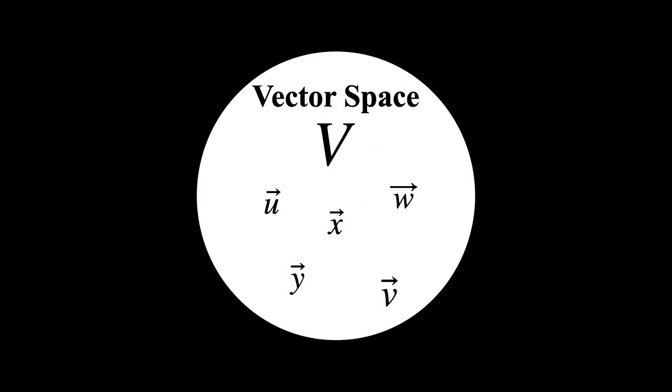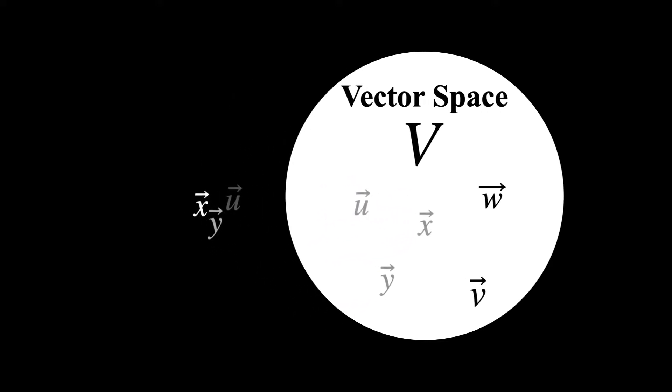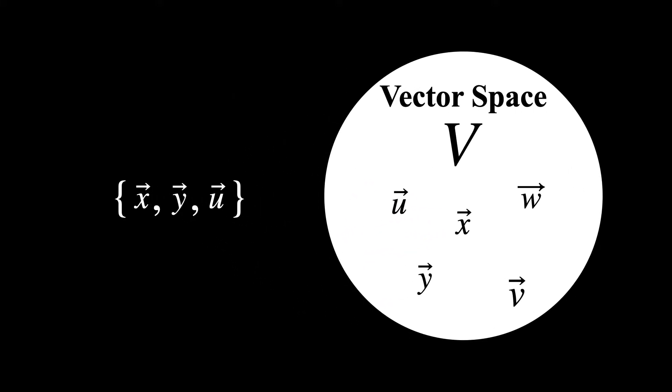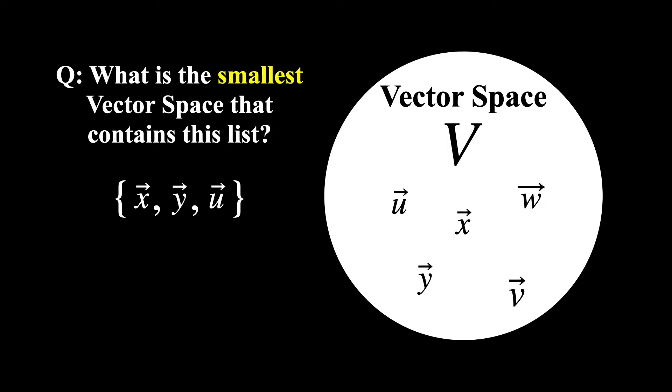To begin, let's suppose we have some arbitrary vector space V and we select a small subset of vectors that live in this space. An interesting question to ponder is what is the smallest vector space that we can now create that includes all of these vectors? Is it the original vector space or some smaller subspace of it?